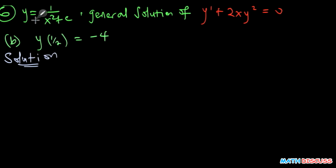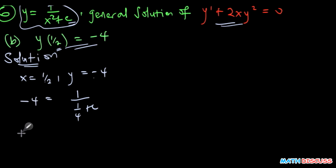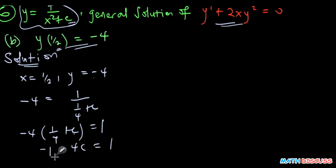Now for the second part, we still use y equals 1 over x squared plus c as the general solution, but this time with a different initial condition: when x equals one half, y equals negative 4. Substituting into the general solution: negative 4 equals 1 over one-quarter plus c. Simplifying: negative 4 times (one-quarter plus c) equals 1, giving negative 1 minus 4c equals 1, so negative 4c equals 2, which means c equals negative one half.